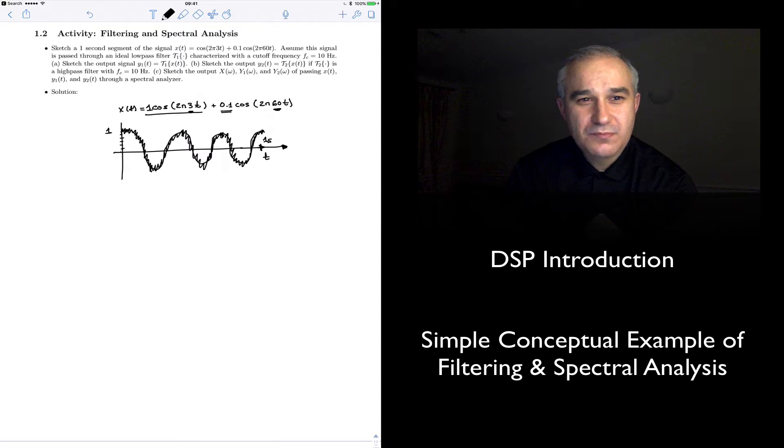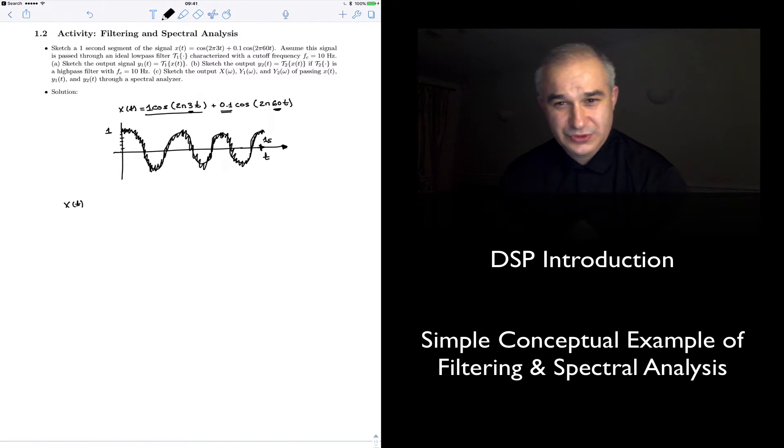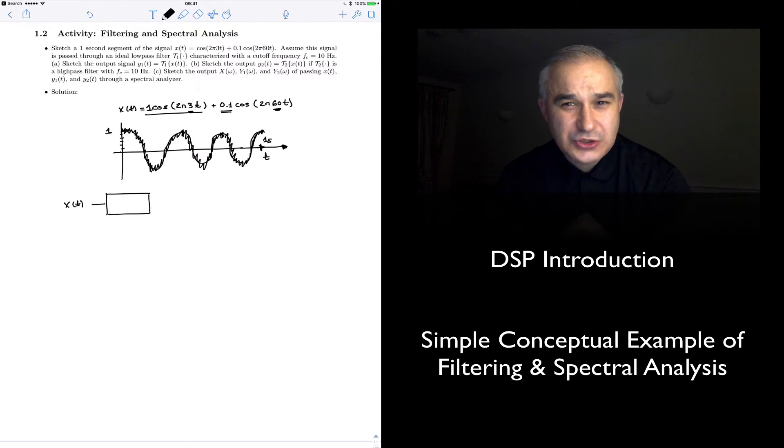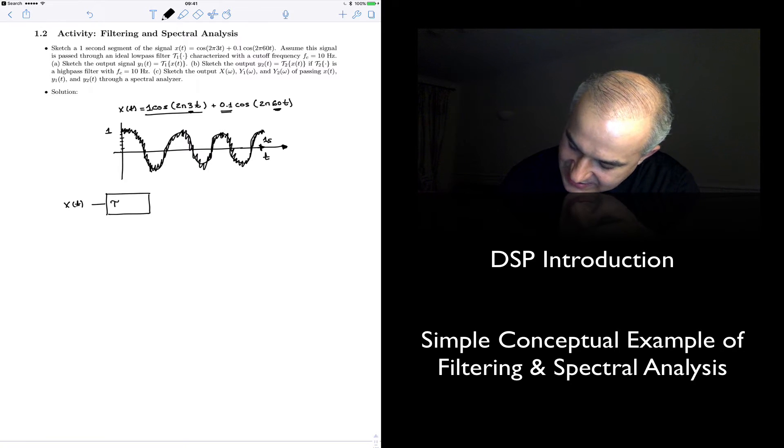So that's the sketch part of it, a rough sketch. Then we are asked, assume that this signal is passed through a low-pass filter, T1, characterized with a cutoff frequency of 10 Hz, and sketch the output. So what we have here is, we have this x(t), our signal, which is continuous time. And it goes through some system. Remember, a signal, a structure of any measurable quantity, anything that changes with time, or space, or any independent variable. A system, anything that acts on the signal.